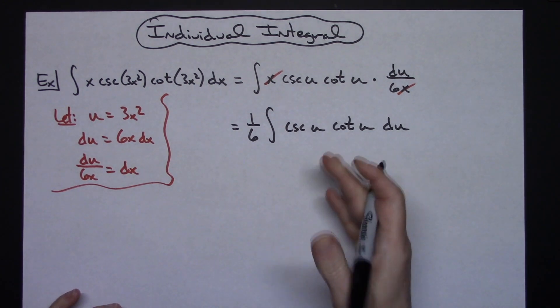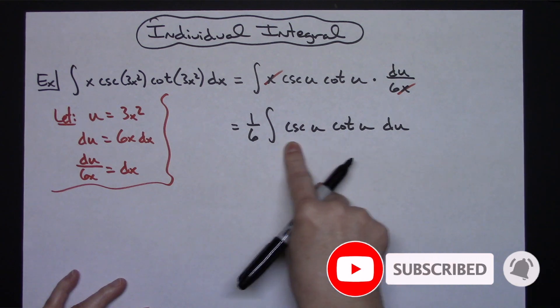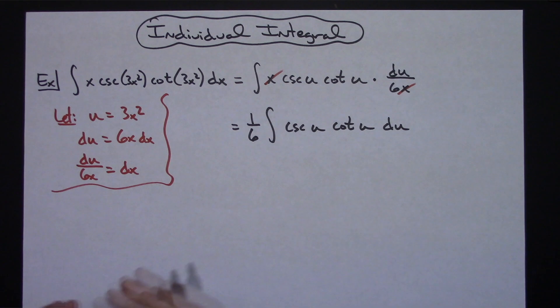Now at this point, the only way you're going to be able to finish this is if you have this integral memorized. This is negative cosecant u. So that is just something that you know—it's one of those trig integrals you have to have memorized.